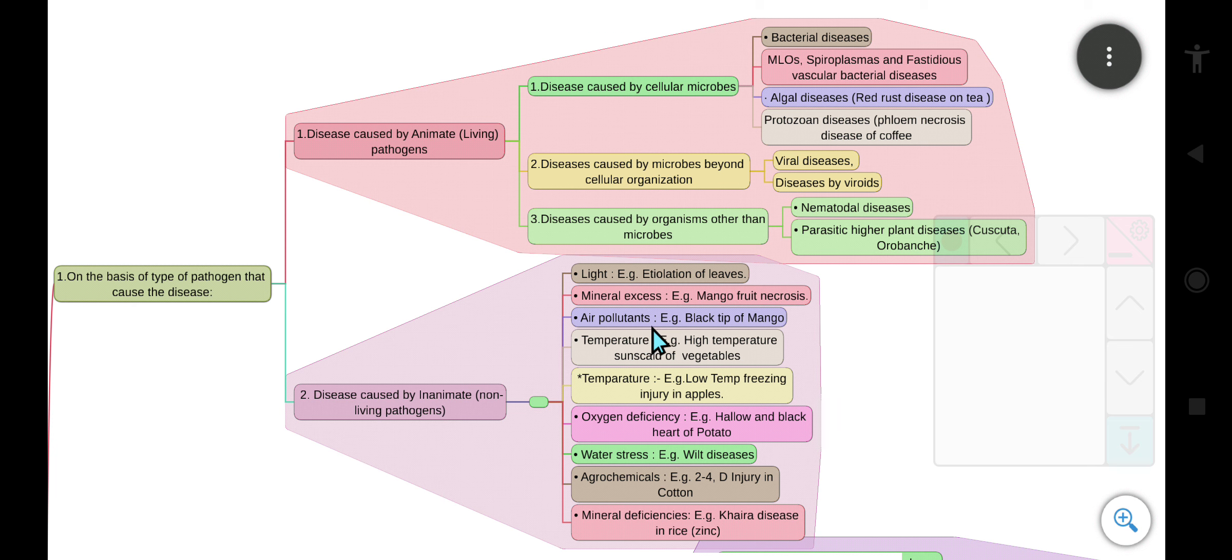Third is air pollutants. Its example is black tip of mango. The fourth one is temperature. Its example at higher temperature is sunscald of vegetables. Also temperature at lower temperature causes freezing injury in apples.